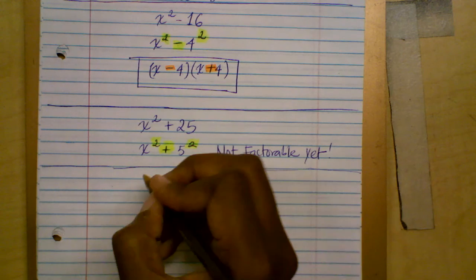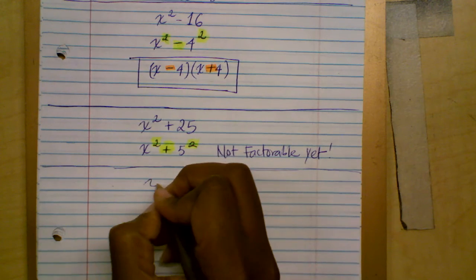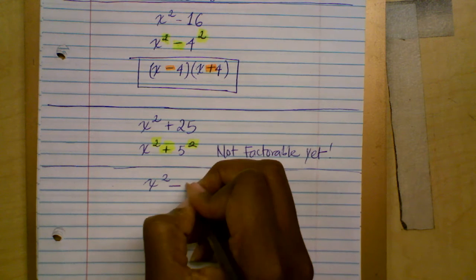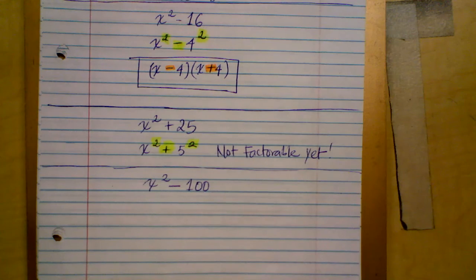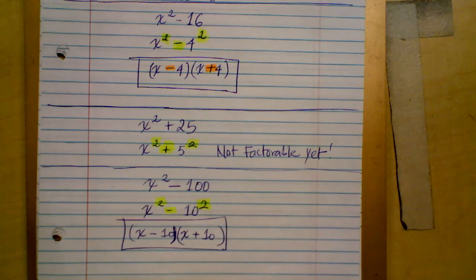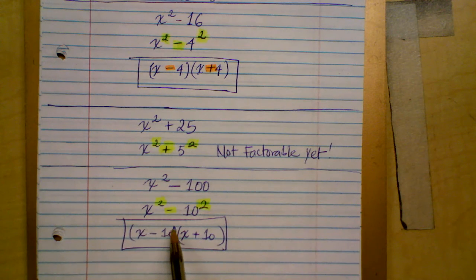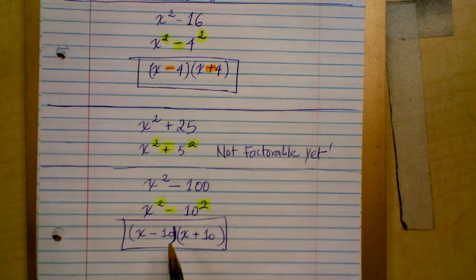My next example: can you factor X squared minus 100? This is the final factored form. Always remember to drop the square when you write it into factored form.